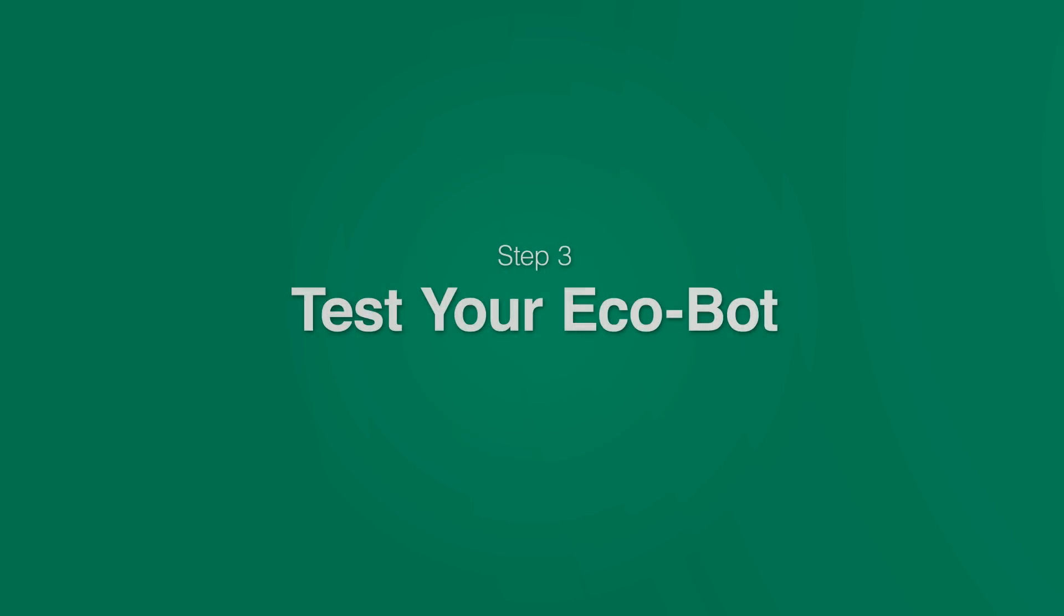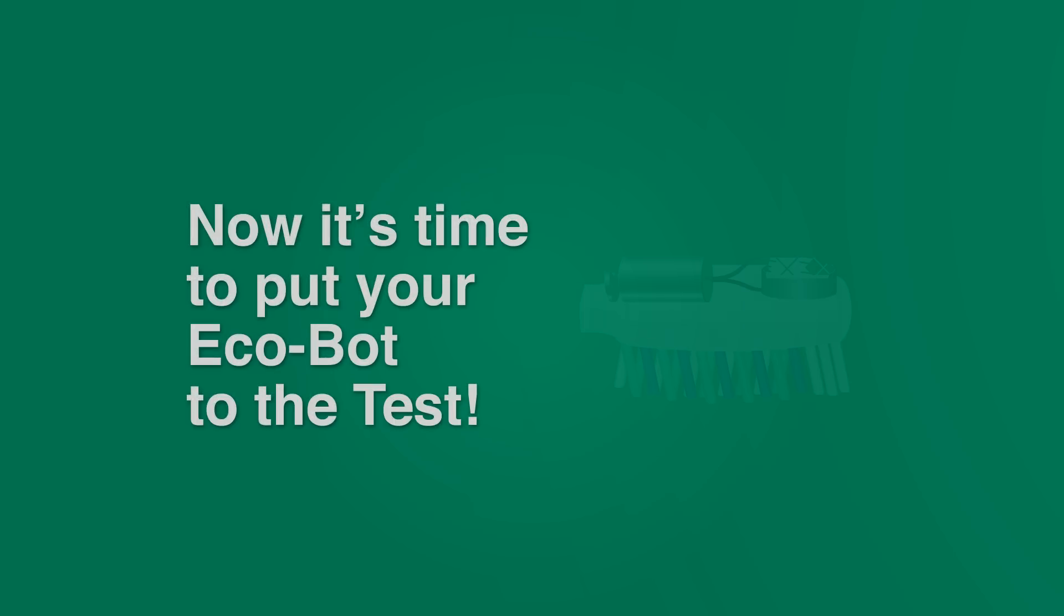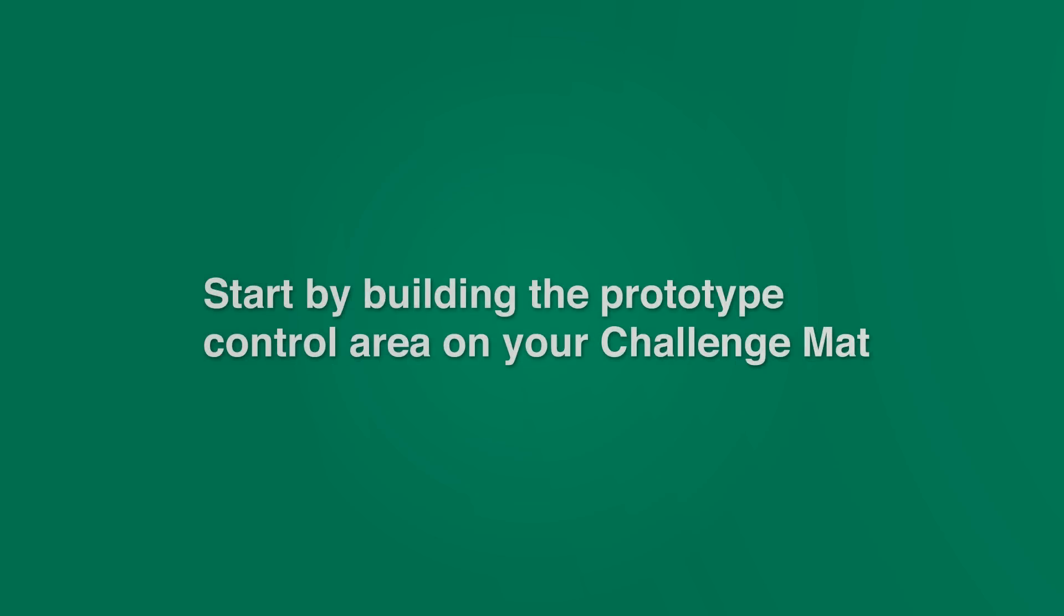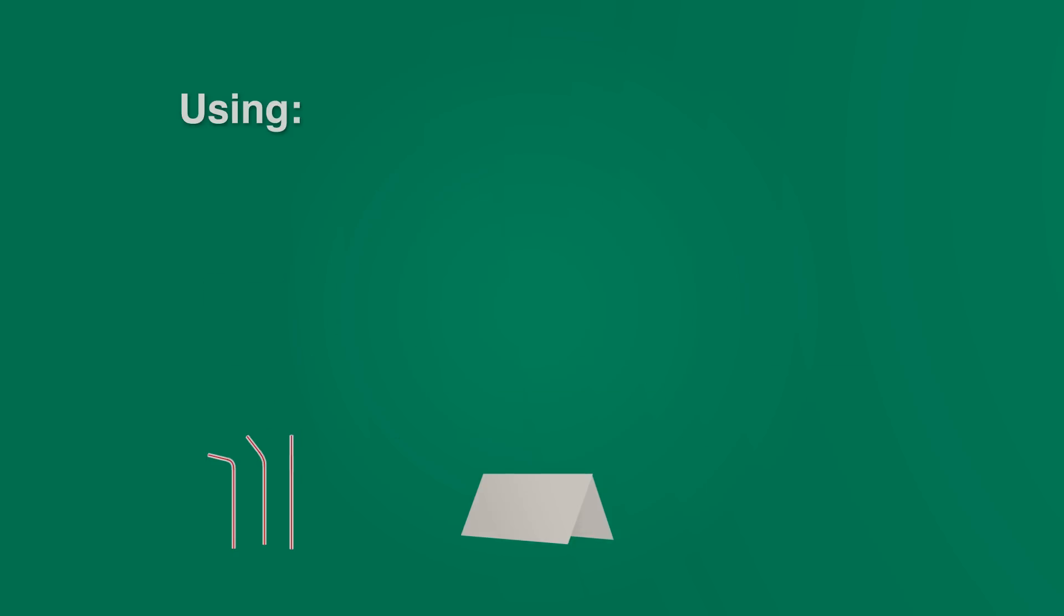Step 3: Test your Ecobot. Now it's time to put your Ecobot to the test. After you design your plan, start by building the prototype control area on your challenge mat using straws, cardstock, and cups.